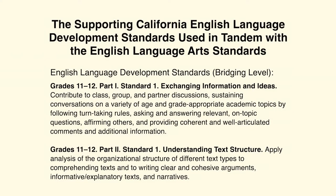The Supporting California English Language Development Standards used in tandem with the English Language Arts Standards: at the Bridging Level, Grades 11 and 12 Part 1 Standard 1, Exchanging Information and Ideas, where students contribute to class, group, and partner discussions, sustaining conversations on academic topics by following turn-taking rules, asking and answering relevant on-topic questions, affirming others, and providing coherent and well-articulated comments. And Grades 11 and 12 Part 2 Standard 1, Understanding Text Structure, where students apply analysis of organizational structure of different text types to comprehending texts and to writing clear and cohesive arguments, informative and explanatory texts, and narratives.